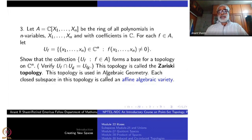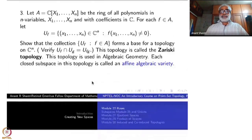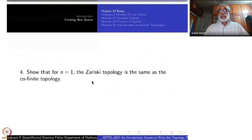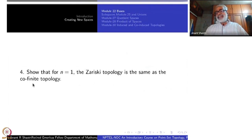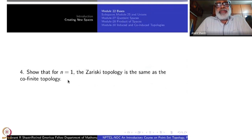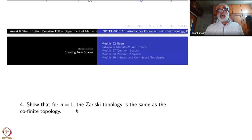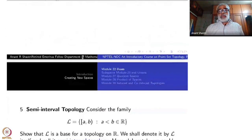In the special case n equal to 1, the Zariski topology is the same as the co-finite topology, where a set is open if its complement is finite. Verify this — it is very easy. For n equal to 2, 3, etc., it will not be the co-finite topology.